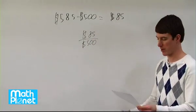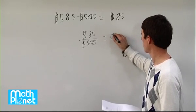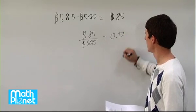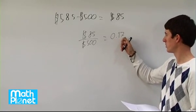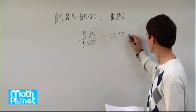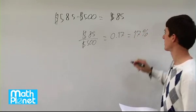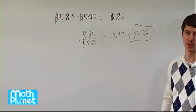$85 divided by $500 is 0.17 in decimal form. In percentage form, we move the decimal place over two digits. That gives us a 17% increase in prize money.